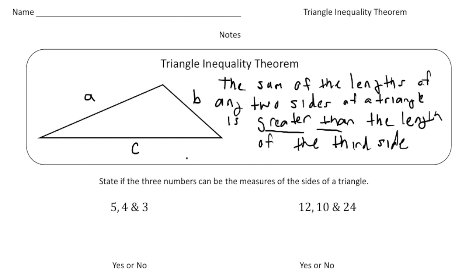So I could say side A plus side B has to be greater than C. So let's say if side A equaled 5 and let's say side B equaled 4, that means side C would have to be, it could not be 9.